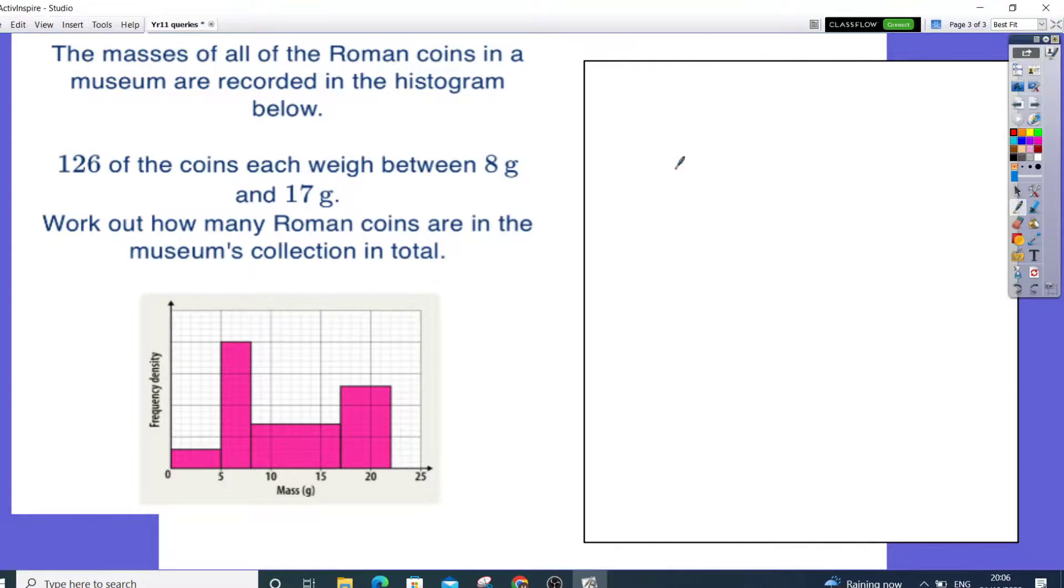Hello everyone, let's have a quick look at this question. The masses of all of the Roman coins in a museum are recorded in a histogram below. 126 coins each weigh between 8 grams to 17 grams. Work out how many Roman coins are there in the museum collection in total. So what we've been told here...